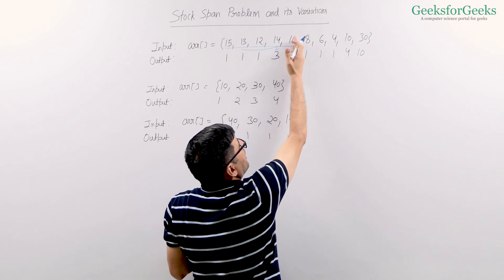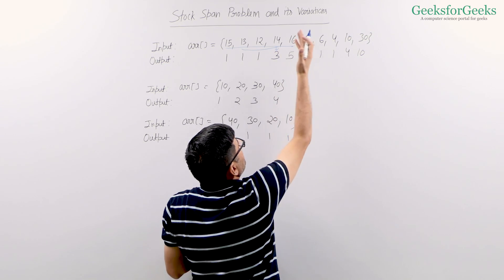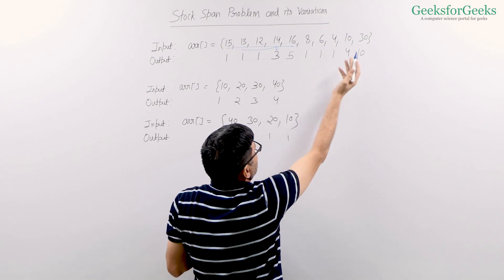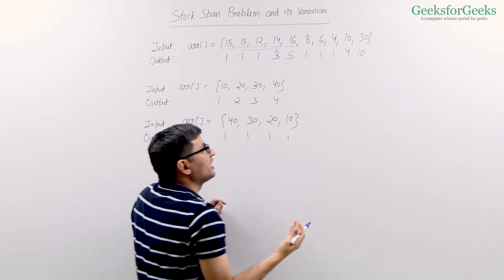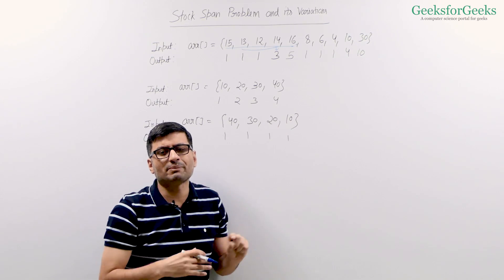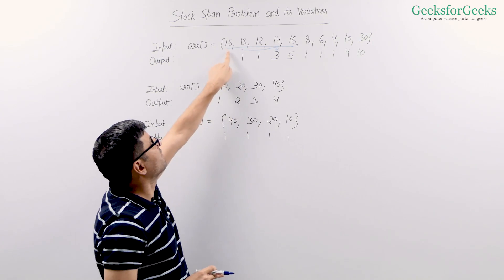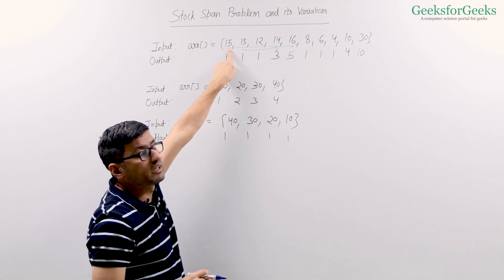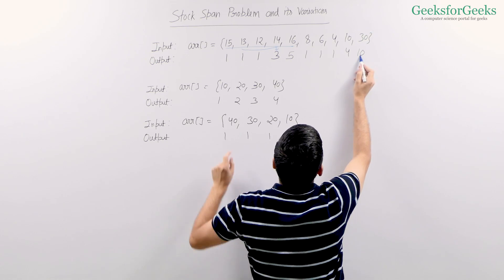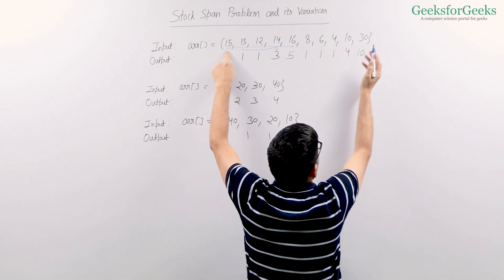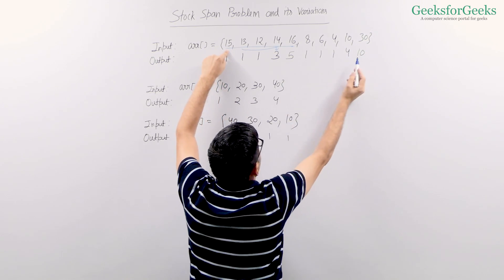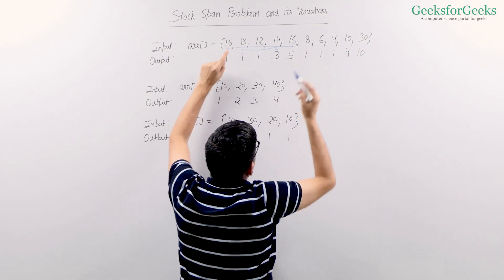For 8, just the left value is greater, so the span is 1. For 6, just the left value is greater, so span is 1. So if the value just before the given element is greater, the span is going to be 1. The span for the first element is also going to be 1. Let's see 30. All the elements in the array are smaller than 30 and 30 is the last element. So span for 30 is 10 because there are total 10 elements in the array.